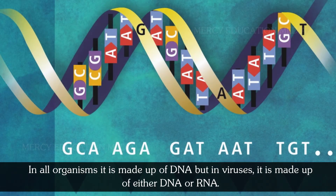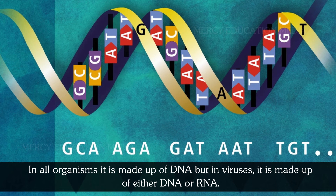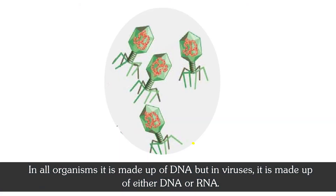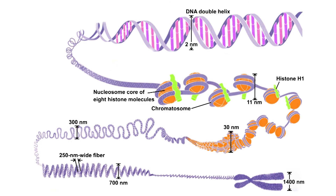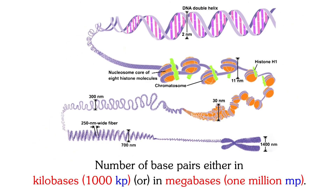In all organisms, the genome is made up of DNA, but in viruses, it is made up of either DNA or RNA. The genome size of an individual is expressed in terms of number of base pairs, either in kilobases or in megabases.